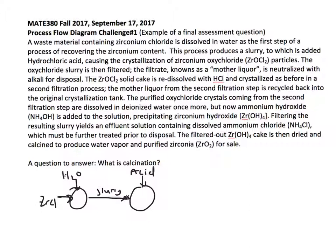The oxychloride slurry, which is probably the zirconium oxychloride, is then filtered. We know that a filtering process produces a filtrate and then a cake. The filtrate comes out here and then we have the cake.